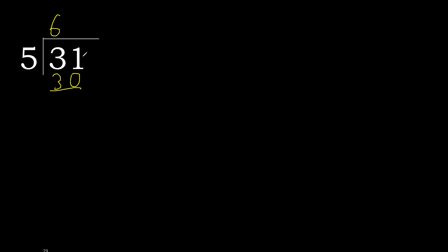31 minus 30 is 1. Next — there is no more number, therefore it is complete. Always complete with a 0 here, with a decimal point. 0 point.